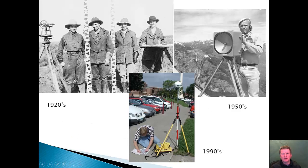In the 1920s we were measuring with an optical device. By the 1950s we were using microwave reflecting systems. Now in the 1990s and beyond, we're using GPS — high-end GPS equipment. You can note that it's actually referencing a sidewalk, so we're using aerial photography to really establish some of these points on the ground now.